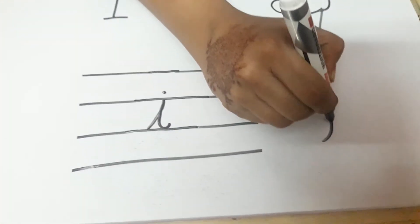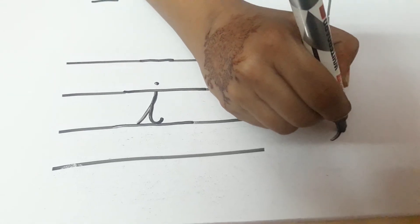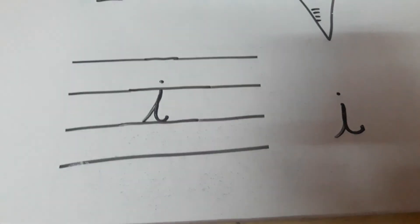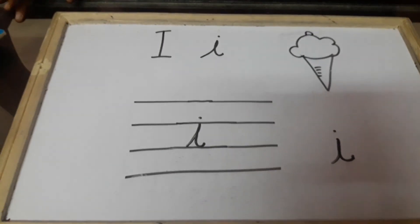Look here again. Slowly, slowly we will go back and put the dot. This is letter I.